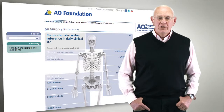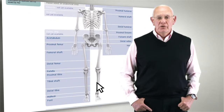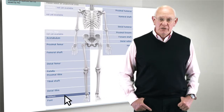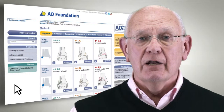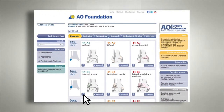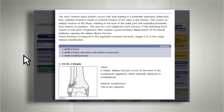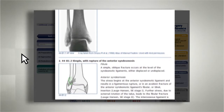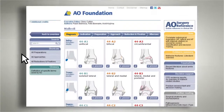I should like to show you how AO Surgery Reference can support you in preparation for surgery using a malleolar fracture as an example. You will first confirm the diagnosis by reviewing information about the classification and select the relevant fracture pattern.